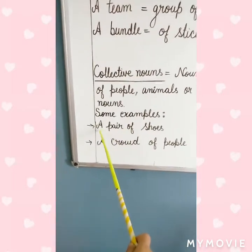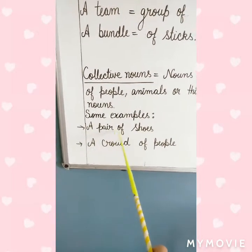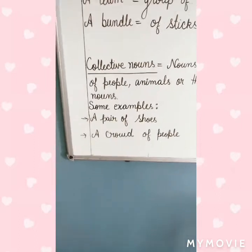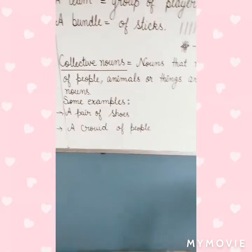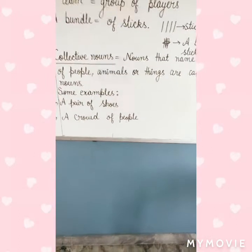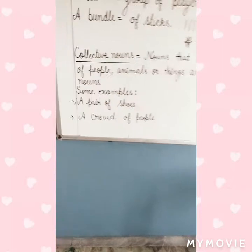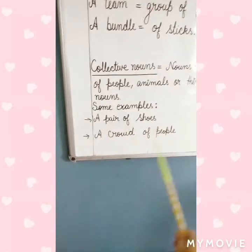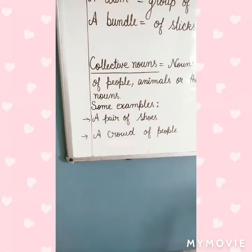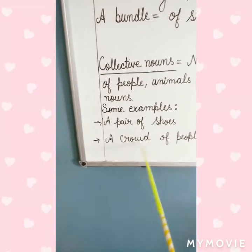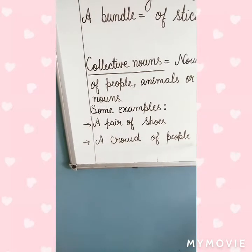Look at some examples. A pair of shoes — 'pair of' means two shoes, so we say a pair of shoes. Next, a crowd of people.